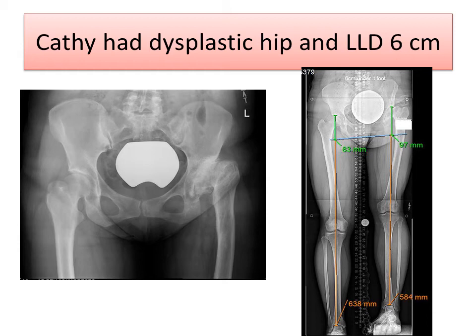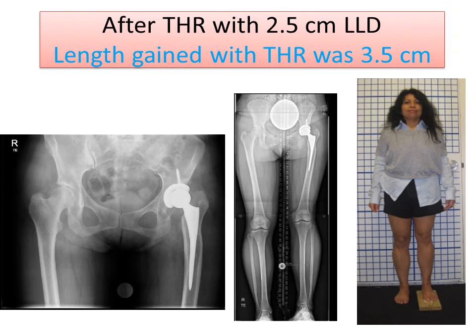I'd like to show you one other example of where we treated leg length discrepancy and arthritis with a combination of hip replacement and bone lengthening. Kathy had a dysplastic hip and a leg length discrepancy of 6 centimeters. After the total hip replacement, we were able to gain 3.5 centimeters. Again, we were constrained by the soft tissue envelope and the sciatic nerve. 3.5 centimeters was achieved in a safe manner, but there was a residual leg length discrepancy of 2.5 centimeters.